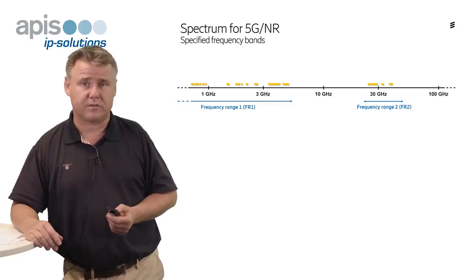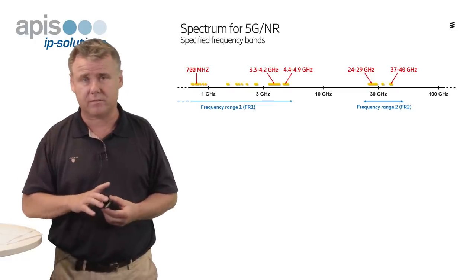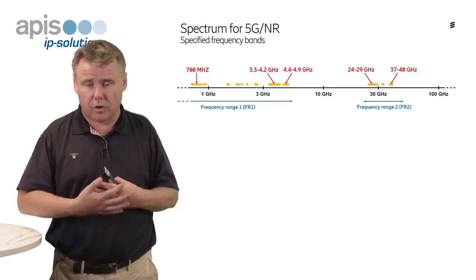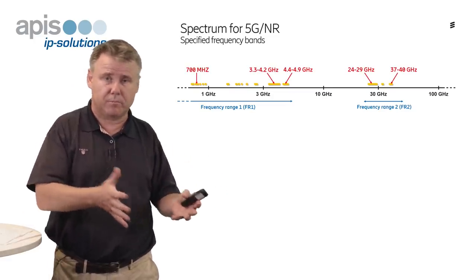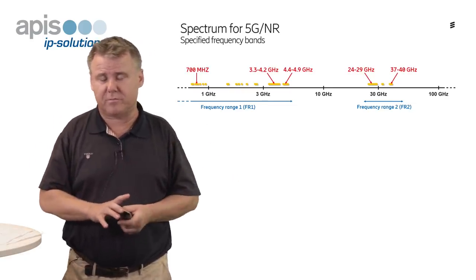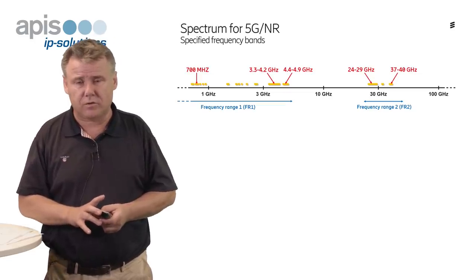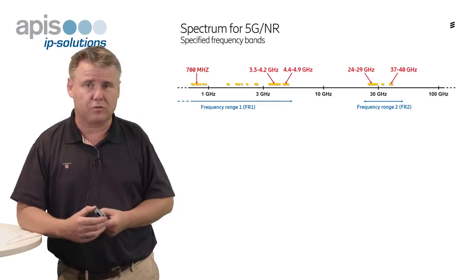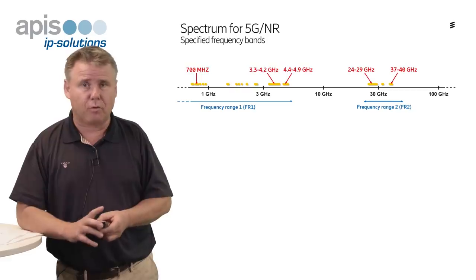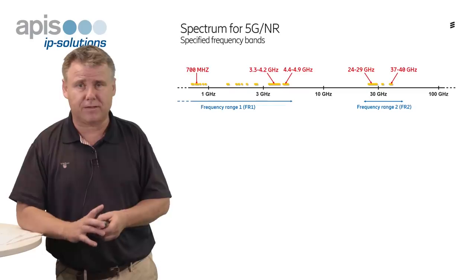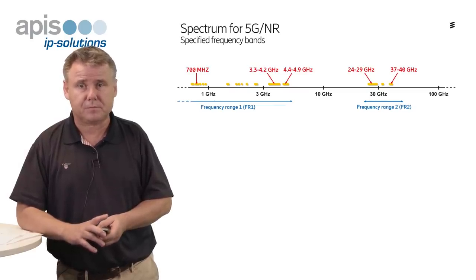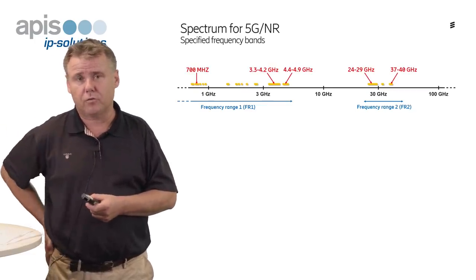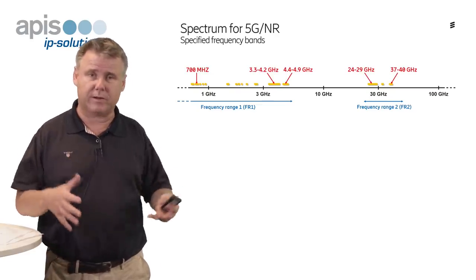NR will operate in all these frequencies. For example, on the millimeter wave side, 24–29 GHz will be widely used in North America and some Asian countries, and around 39 GHz will also be available and used extensively in North America. On the lower side, spectrum from 3.3 GHz to 4.2 GHz is seen as a very important band for NR — earlier considered likely for LTE but now increasingly seen as an NR band. Finally, some operators are also considering utilizing NR as low as 700 MHz; they won't get very wide transmission bandwidth or very high data rates, but will get very good coverage.